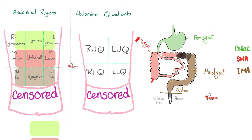The proximal part of the colon belongs to the midgut, so any inflammation here refers pain to the periumbilical area — case in point, appendicitis. Conversely, the distal part of the colon, the hindgut, if it has a problem, the pain will be referred downstairs — case in point, diverticulitis. Medicine makes so much sense once you understand it. And if you have a stomach ulcer, you get epigastric pain, because the stomach is part of the foregut.